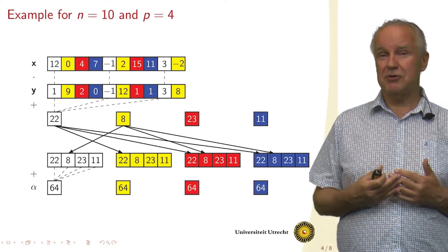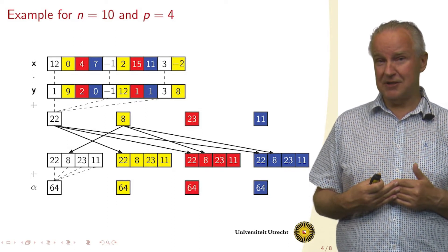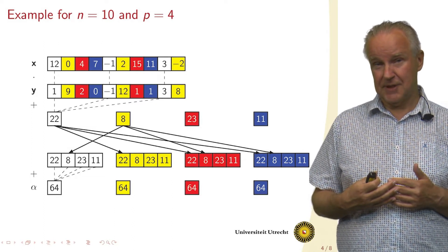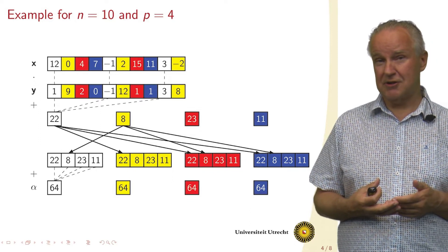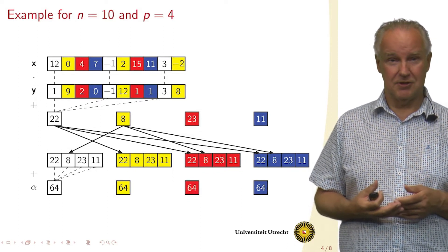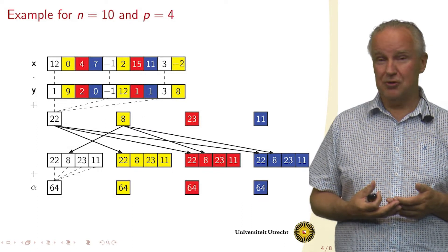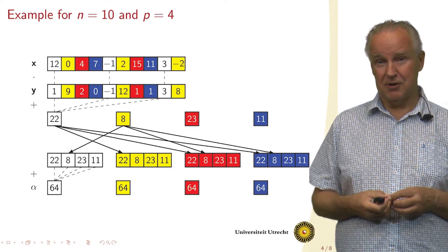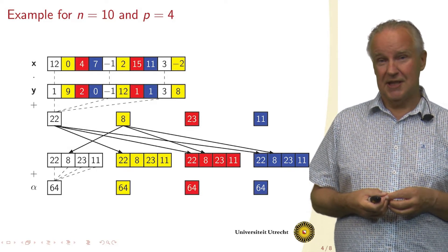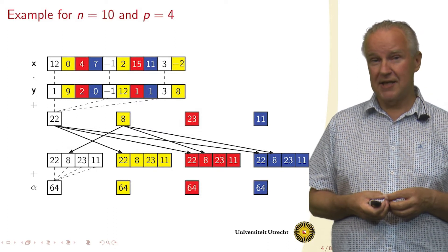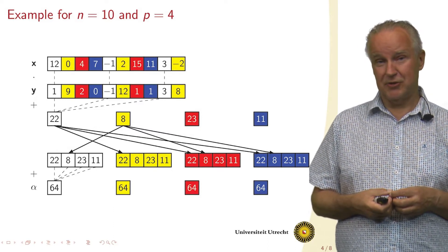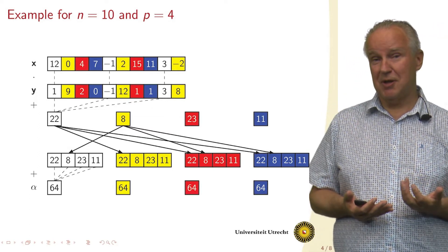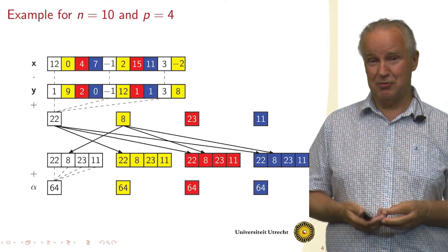So this is what happens in the first super step of the algorithm. Then we want every processor to have the final result, so we need to communicate. And the easiest way of doing this is that every processor sends its result to the others. For example, the 22, computed by processor 0, which is the white processor, is being sent to all the other processors. And you see, it is being stored in a little array of length 4, where it is the first number. All the processors, they redundantly compute the same number 64, which is the overall inner product.